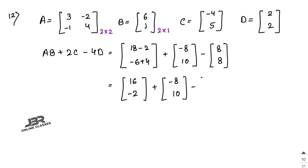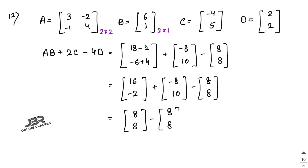Now combine: AB + 2C − 4D = [16; −2] + [−8; 10] − [8; 8]. First element: 16 − 8 − 8 = 0. Second element: −2 + 10 − 8 = 0. The answer is [0; 0].